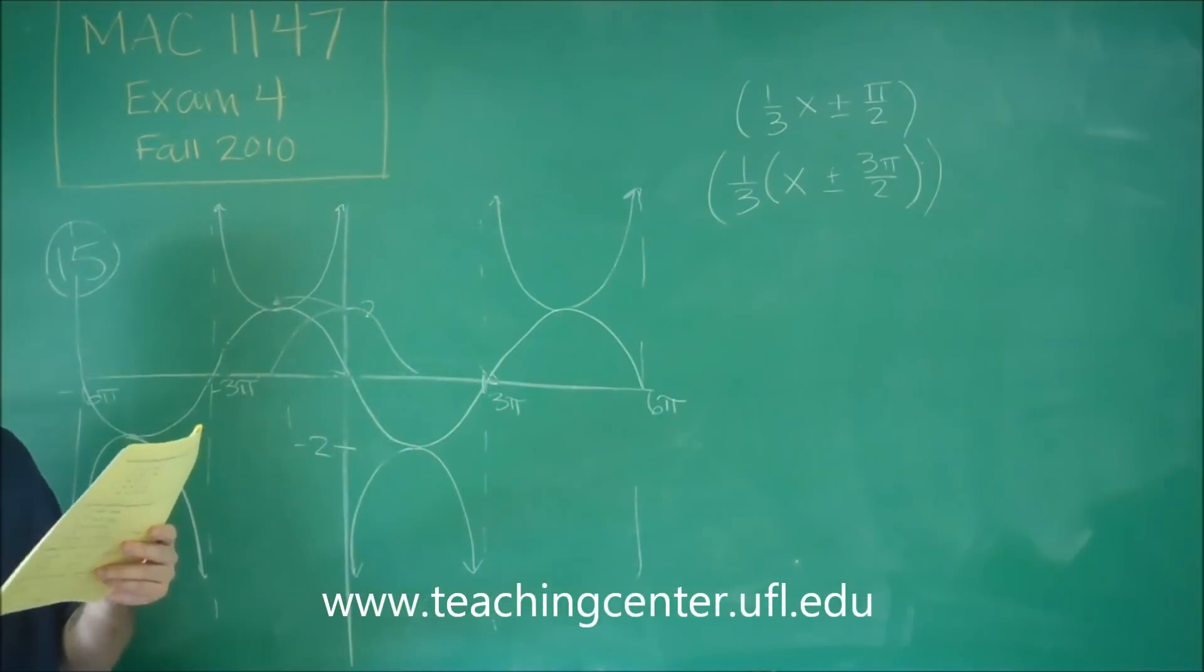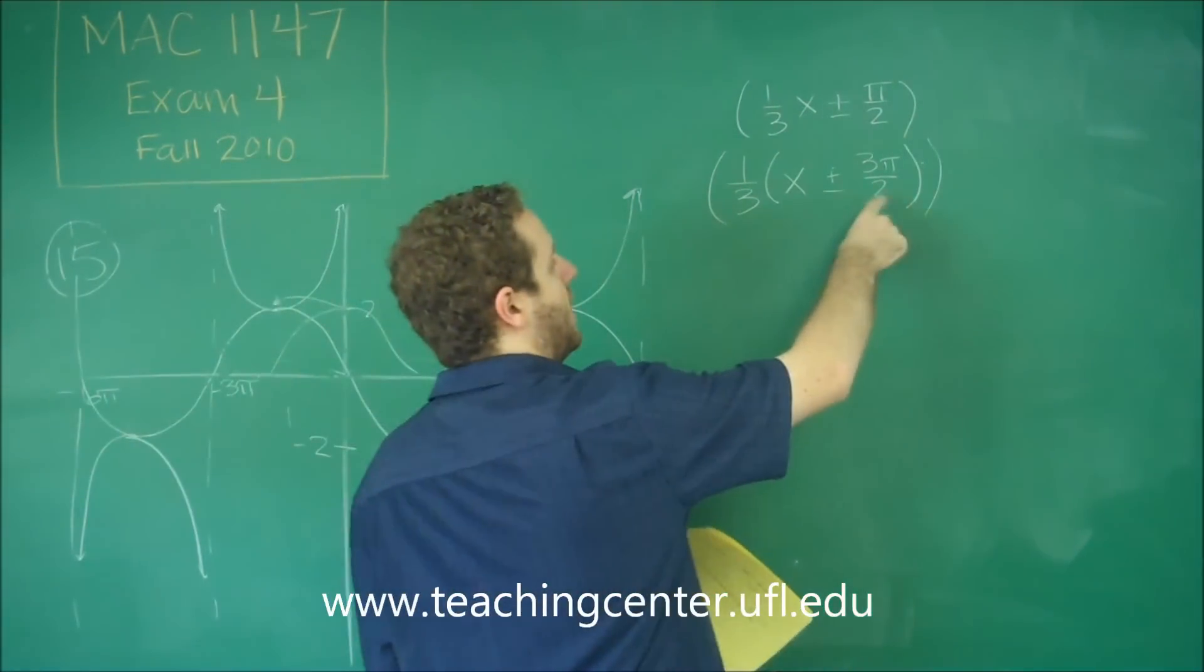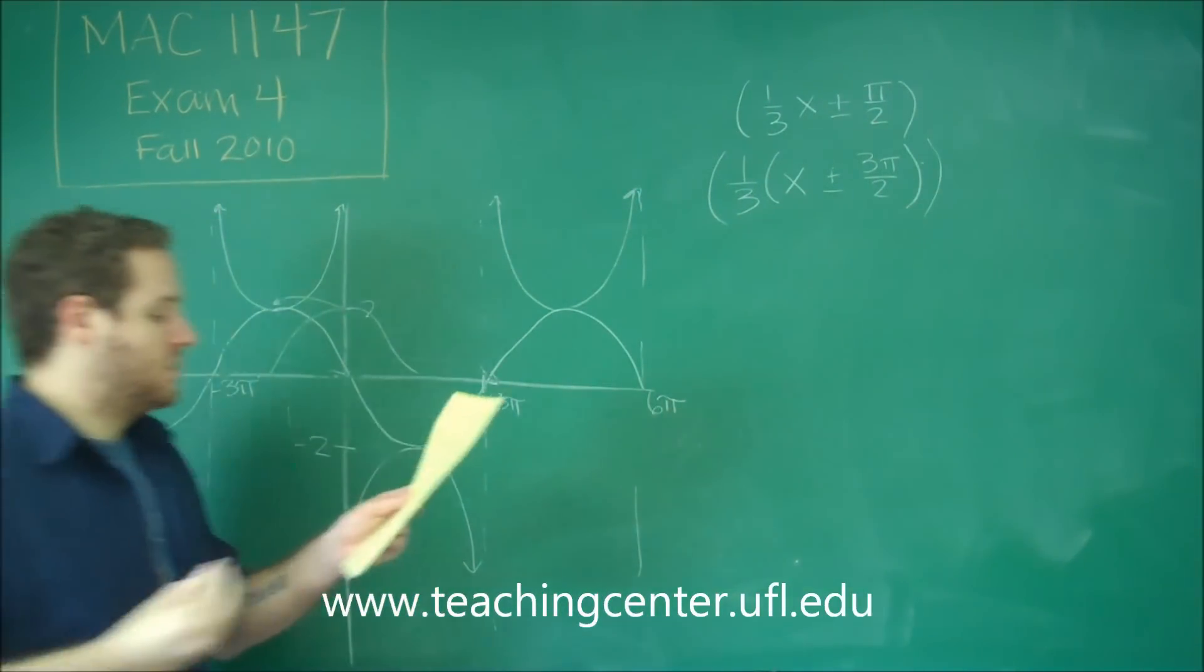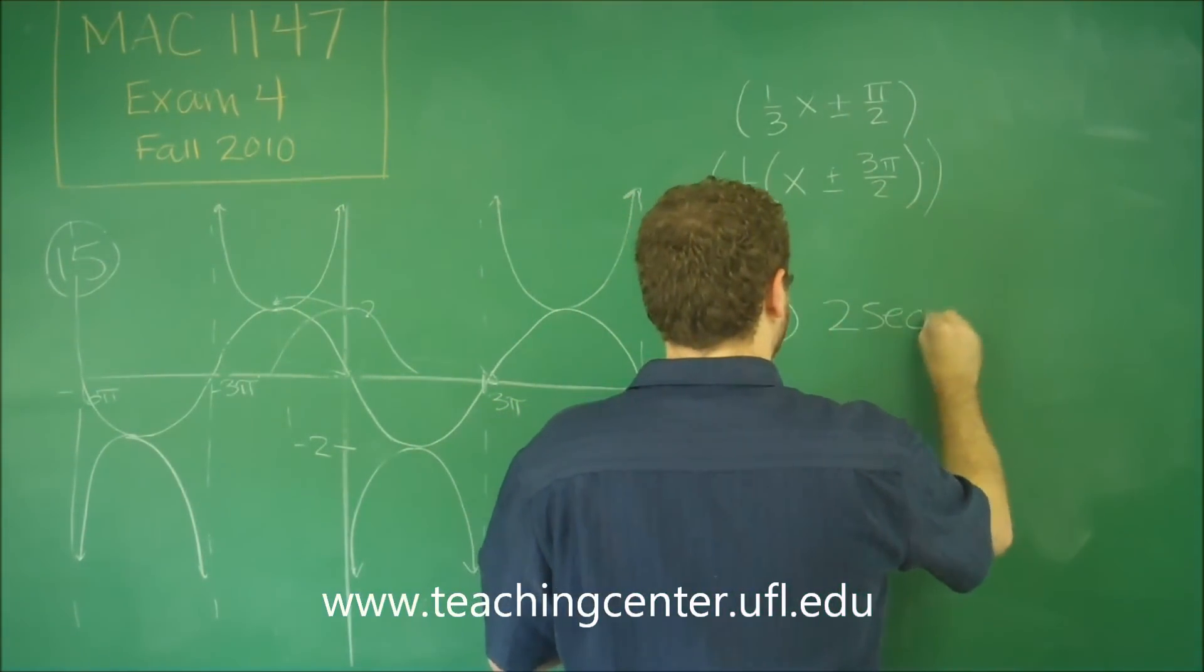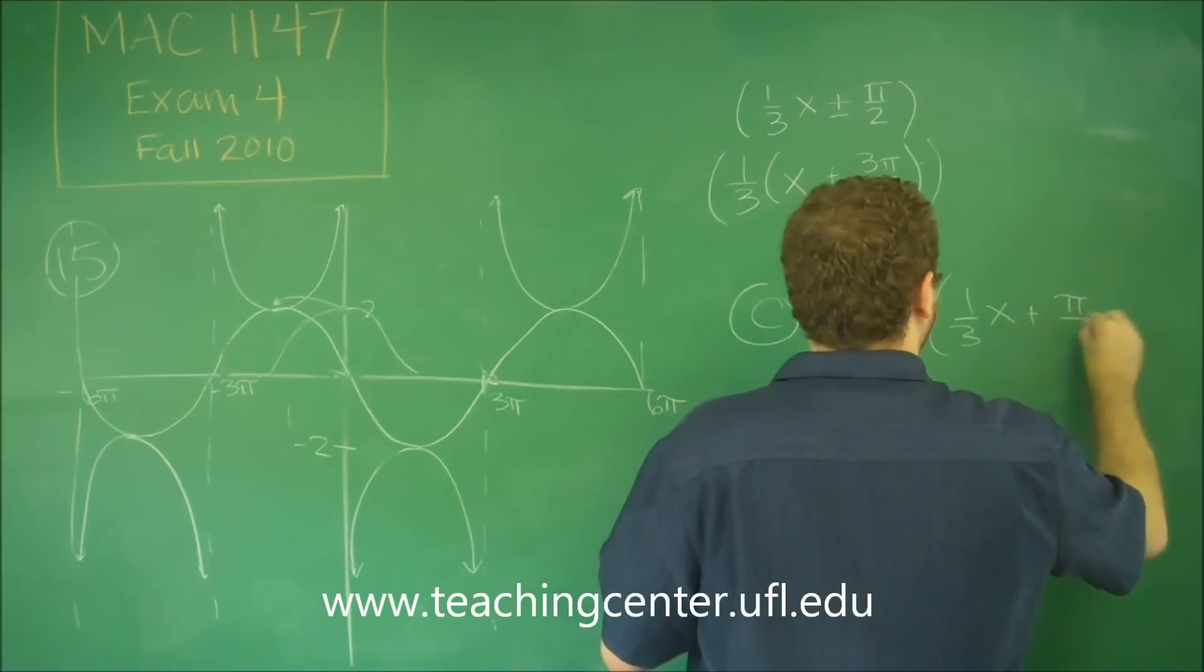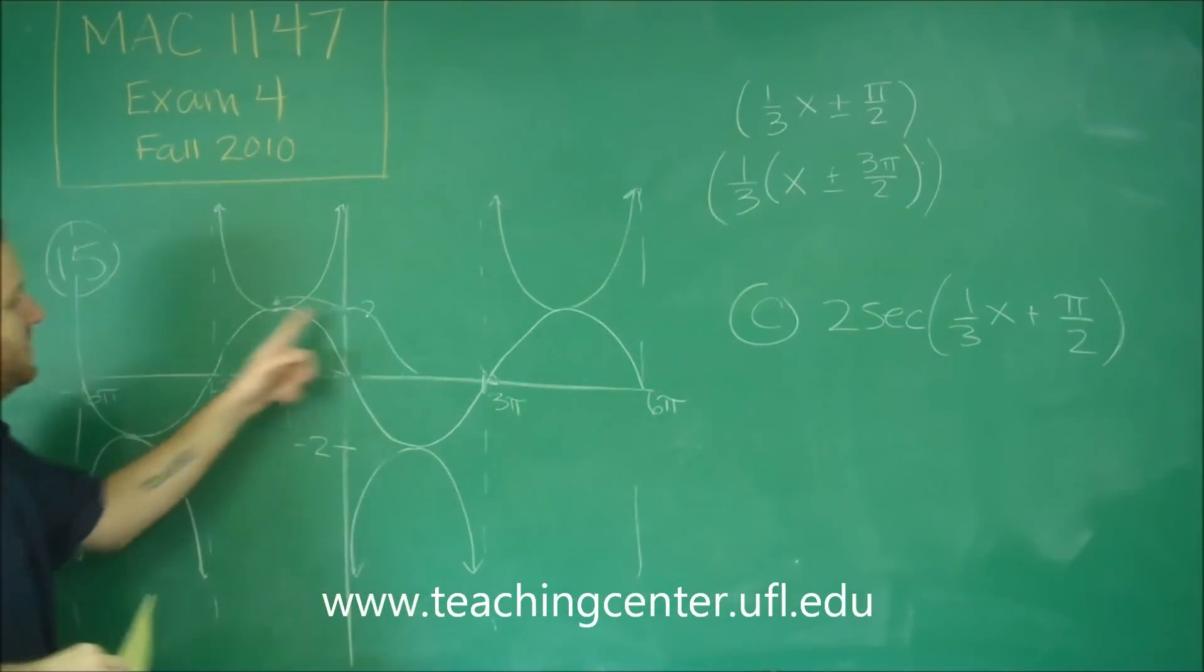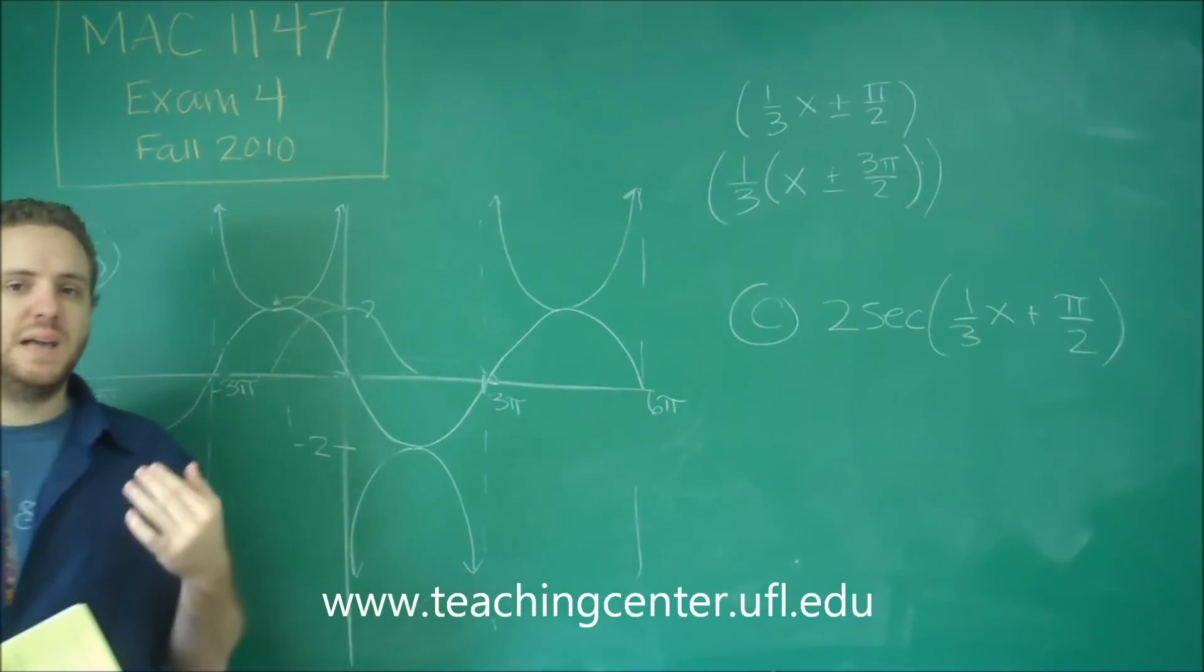So A is shifting to the right, C is shifting to the left. Remember, they're both doing 3 pi over 2 because when we factored it out, you can see what's happening there. But we need the one that's plus, because it has to go to the left. So our correct answer there is C, 2 secant 1 third x plus pi over 2. Because when you factor out that 1 third, you would get a plus 3 pi over 2, shifting to the left 3 pi over 2 from the starting cosine curve is exactly what we need.